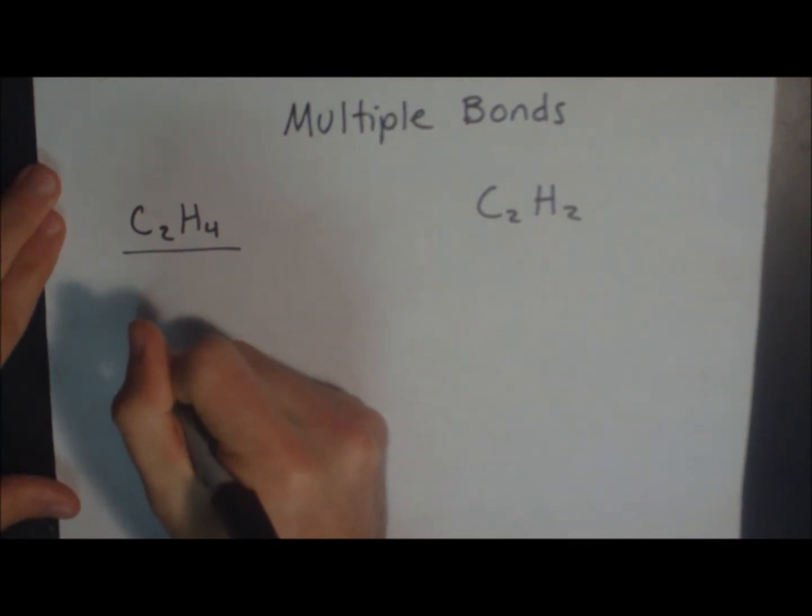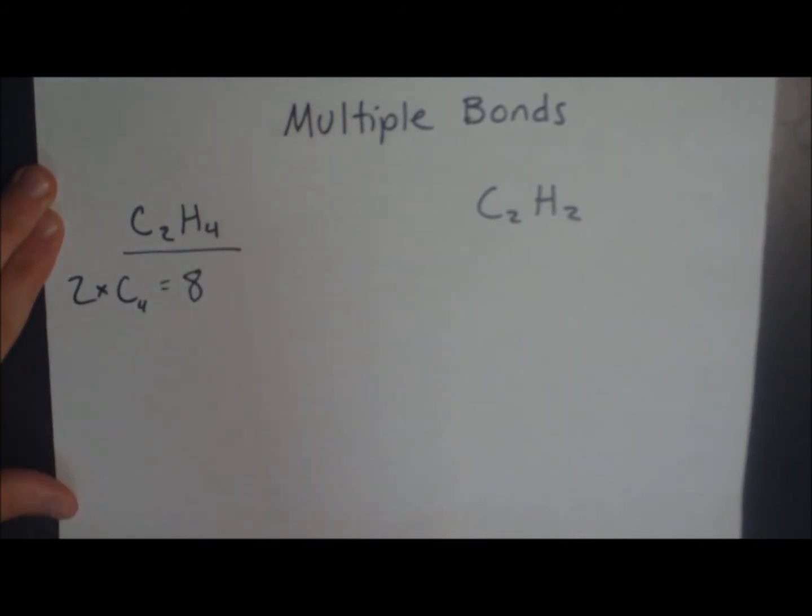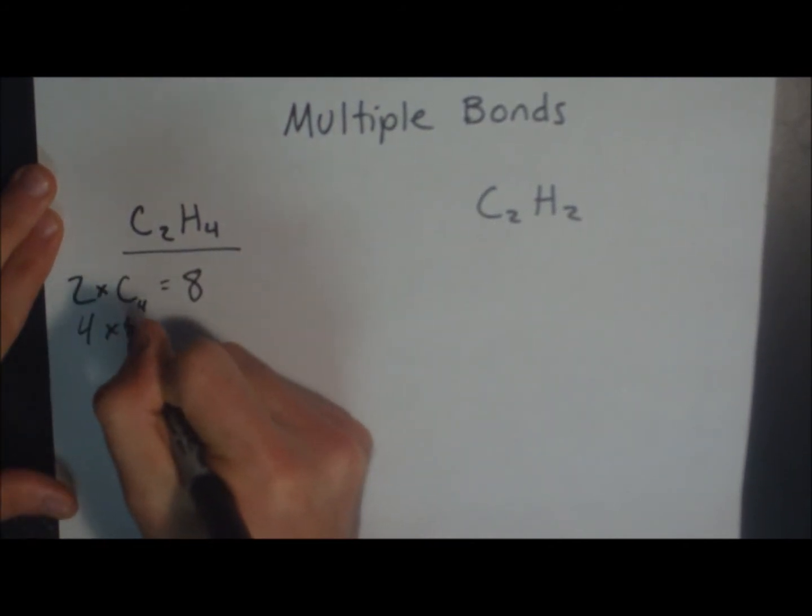We're going to do the same thing. First we're going to count up the number of carbons, 2, which is a group 4 element. Which means we'll have 8 electrons to play with. And there are 4 hydrogens, each having 1 valence electron.